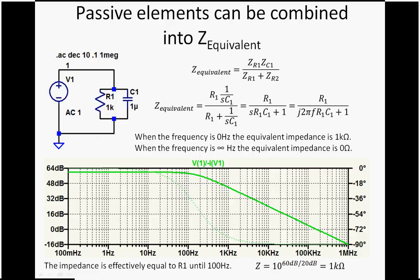And in this case, they're in parallel, this R1 and C1. So we just use the parallel combination that we used to use for resistors, except now we use it for impedance. We just plug this into our equation here, and we get what looks to be like a transfer function.